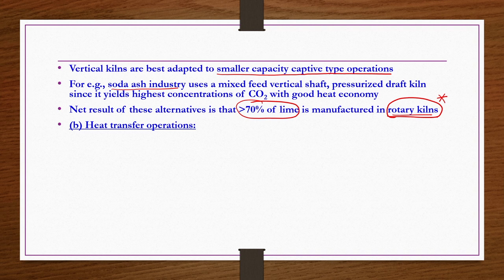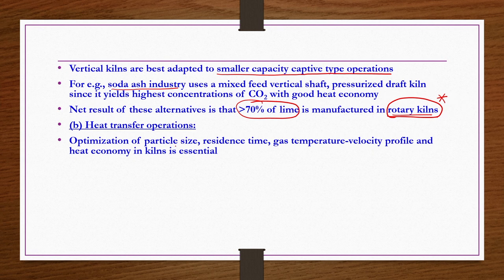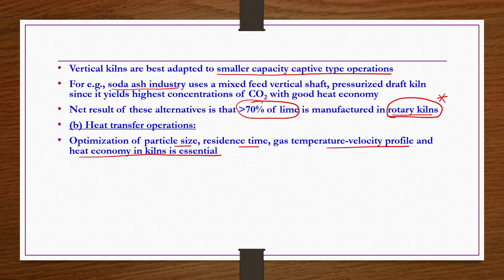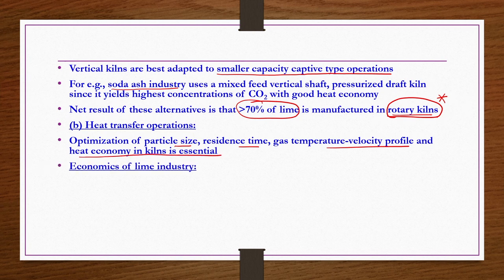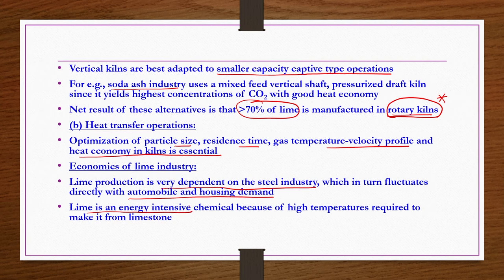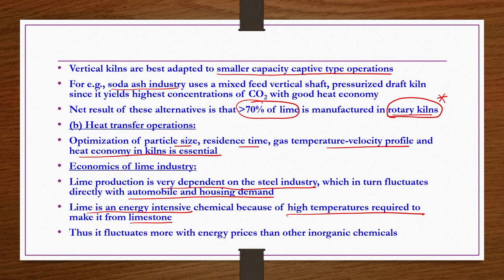The other engineering problem is heat transfer operations. Optimization of particle size, residence time, gas temperature, velocity profile, and heat economy in kilns is very essential. Economics of the lime industry: lime production is very dependent on the steel industry, which in turn fluctuates directly with automobile and housing demand. Further, lime is very energy intensive because approximately 1000 degrees centigrade or higher is required to make it from limestone. Thus it fluctuates more with energy prices than other inorganic chemicals.